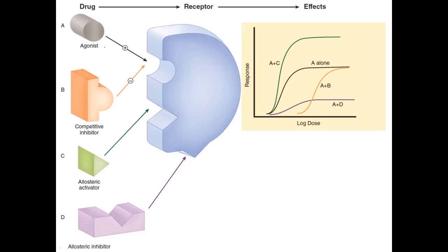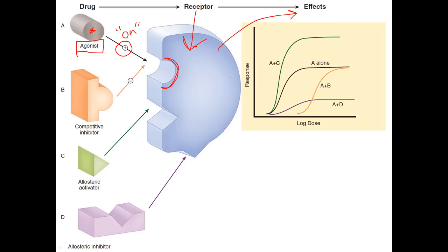Here is a picture that will help clarify things. The agonist is going to bind to the receptor here at this binding site and it's going to turn it on. So this will follow this pathway and have an effect.